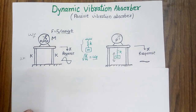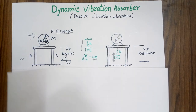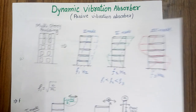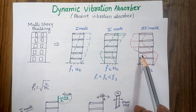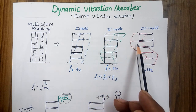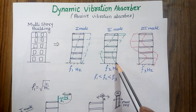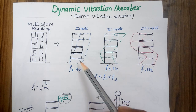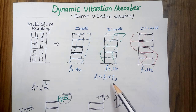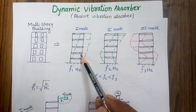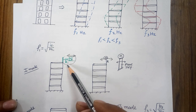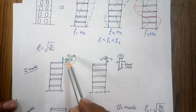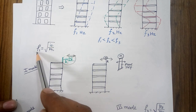We can also see the same use of vibration absorber for a multi-story building. I have made the mathematical model of a multi-story building showing three different modes corresponding to frequencies f1, f2, and f3. Since f1 corresponds to the first mode, it will be lower than the other two values. If I want to add a vibration absorber corresponding to the first mode frequency, I have to design an absorber whose natural frequency matches f1.